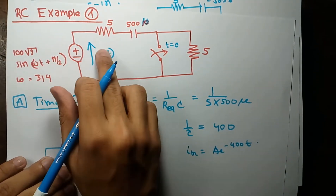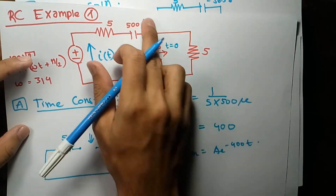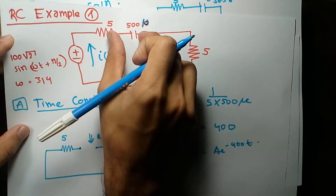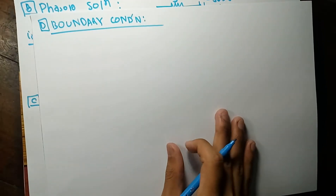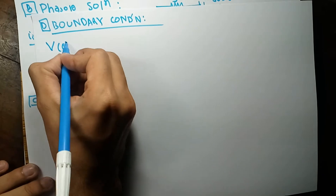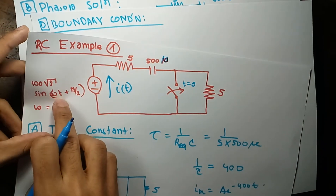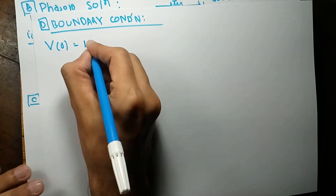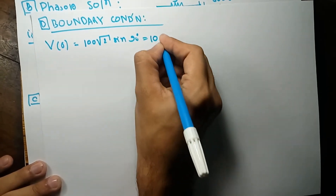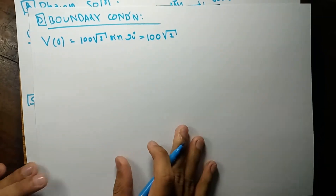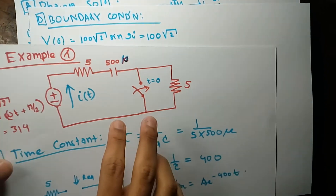To find the initial voltage, we evaluate the source voltage at t equals zero. The source voltage is 100√2·sin(90°), which equals 100√2 volts. Now we need the initial capacitor voltage. Since voltage across a capacitor cannot change abruptly, we analyze the circuit at t equals 0 minus.